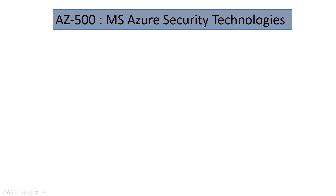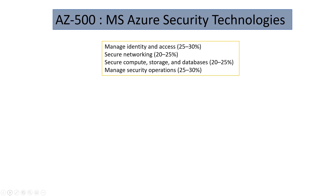Let's have a quick look at what we need to cover. These are the four modules with a huge number of chapters. Managed identities and access — you can easily guess, all about Azure AD and its features, which is almost 30%. Then secure networking, which consists of all your networking resources: NSG, firewalls, private access, and a lot of things. Then we have compute, storage and database security, and SOC — manage security operations.